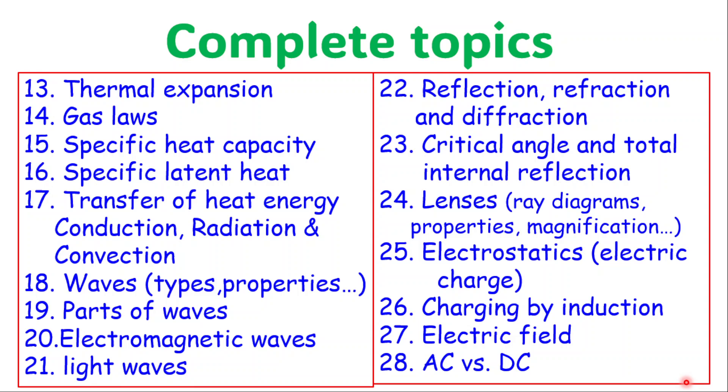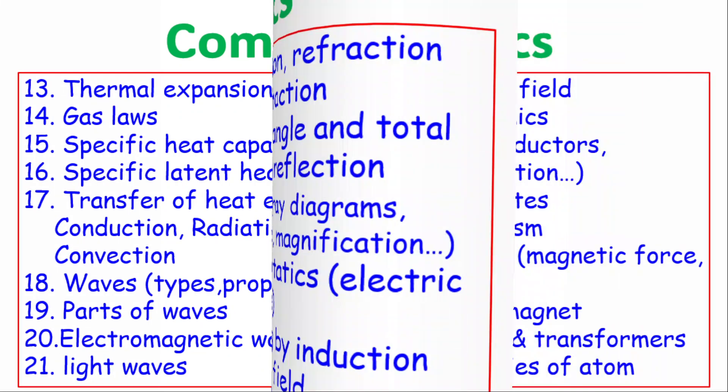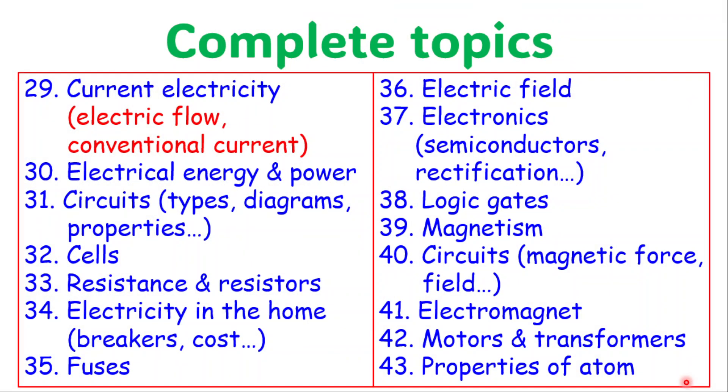The 24th section of the subtopics include lenses, you have to know ray diagrams, properties of ray diagrams, magnification, electrostatics, electrical charge. You have to know those, those are things you want to pay attention to. Charging by induction, electric field, AC versus DC. And continuing, we have current electricity, electric flow, conventional current, electrical energy and power, circuits, and types of circuit diagrams, series and parallel, series parallel, and also the properties of the different circuits. So it is good for you to at least look at circuits. I would say at least remember it.